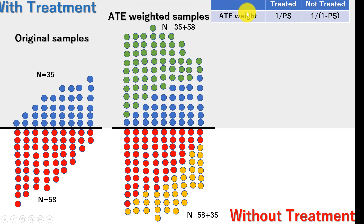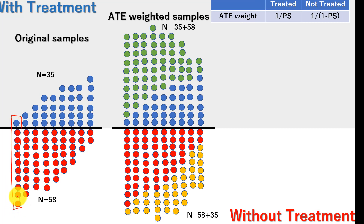Now let's consider ATE weight. For treated patients, the ATE weight is 1 over the propensity score. For untreated patients, the weight is 1 over (1 minus the propensity score) — this is the inverse of the probability of not receiving treatment.